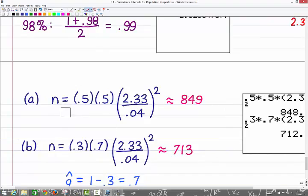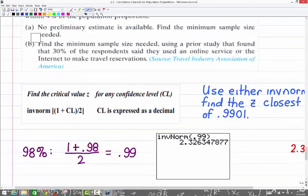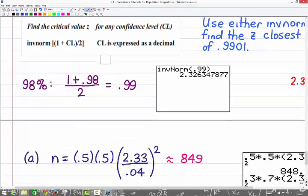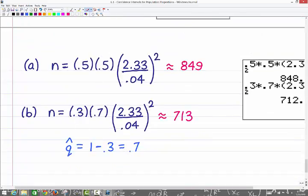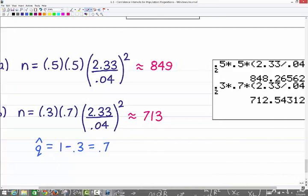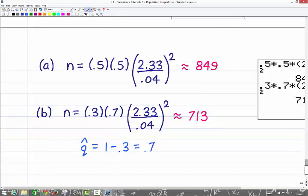So now we use that 2.33 that we just found above divided by .04, .04 is 4%. So remember you only square that part. I did it in the calculator over here to the right. I got 848.2 something, so I rounded up to 849 would be the appropriate sample size we need, minimum sample size. And then the next one, the only difference is that you see the preliminary estimate was 30%. So that means your P hat would be .3. So if P hat is .3, Q hat would be 1 minus .3 is .7. And then you have the same 2.33 divided by .04 squared. And that turns out to be 712 point whatever, but just round up to 713. And that would be the answer for that one. Sample size would be 713. And that is the end of this video.